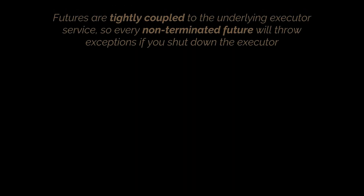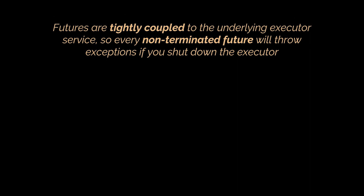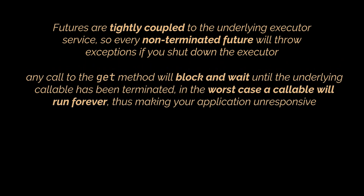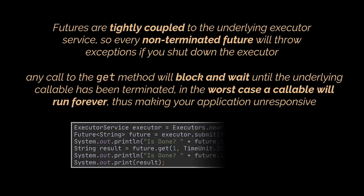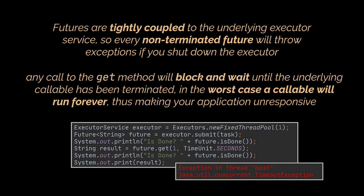Futures are tightly coupled to the underlying executor service, so every non-terminated future will throw exceptions if you shut down the executor running it. Any call to the get method will block and wait until the underlying Callable has terminated — in the worst case a Callable runs forever, making your application unresponsive. You can counteract this by passing a timeout to the overloaded version of get. In the example shown, a TimeoutException is thrown because we specified a maximum wait time of one second but the Callable needs two seconds to complete.